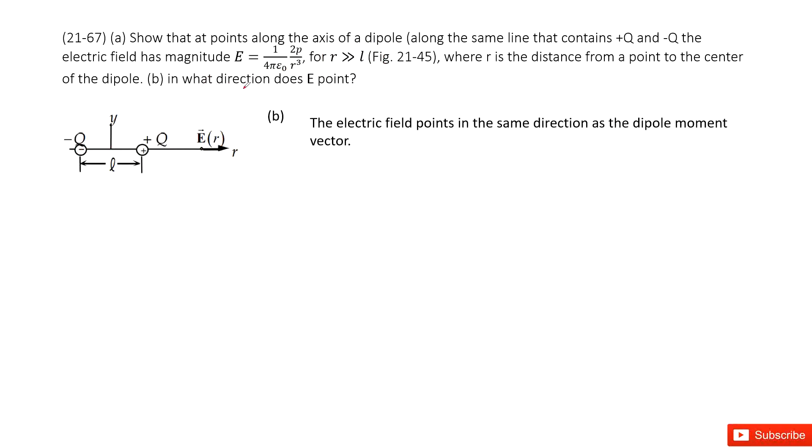Next question. What direction does the E point? It points to the same direction as the dipole's momentum. Because you can see in this function, this E function equals 1 over 4 pi epsilon naught r cube. All this term is just variables. So only vector is p. This p is the moment of the dipole. So now we proved it. Thank you.